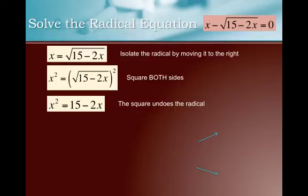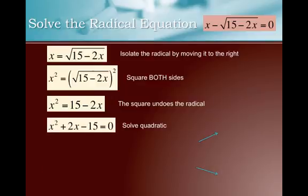All right, we ask ourselves, hey, what is this? This is a quadratic equation. We have an x squared. And so I need to solve the quadratic. How do we do that? Well, we move everything to one side of the equation. And so I have x squared plus 2x minus 15 equals 0.